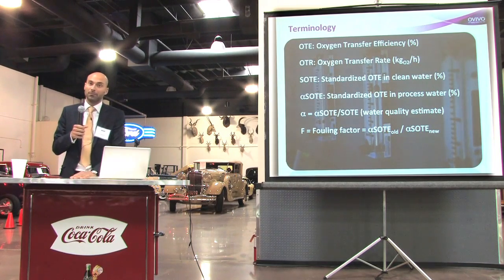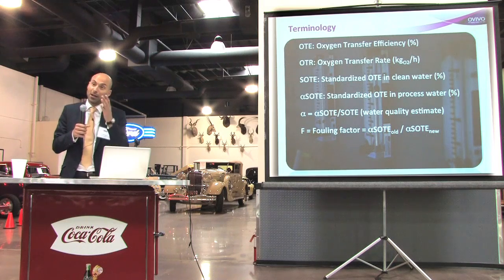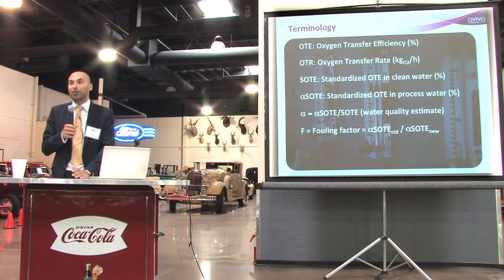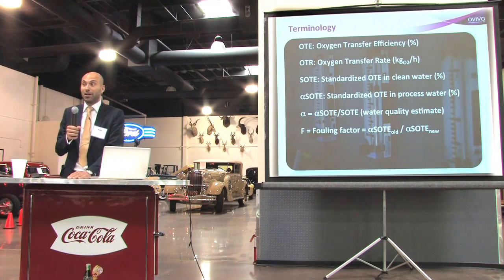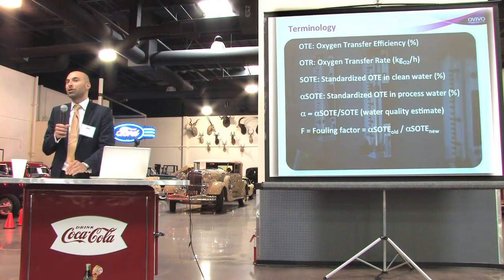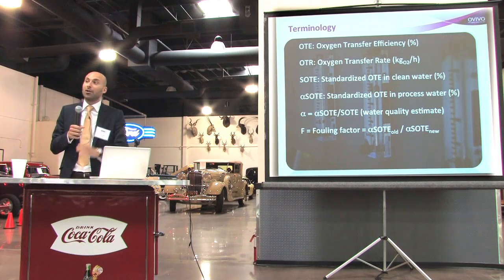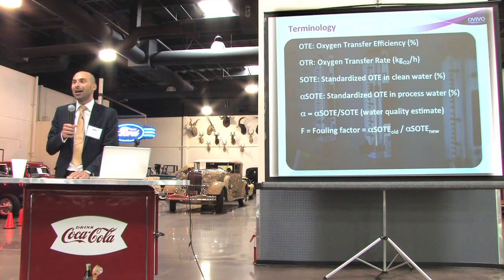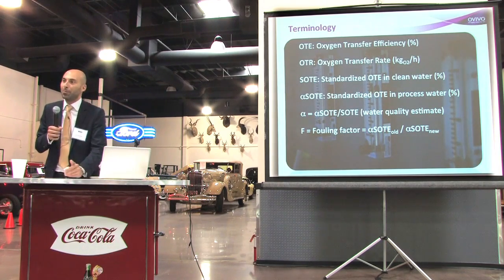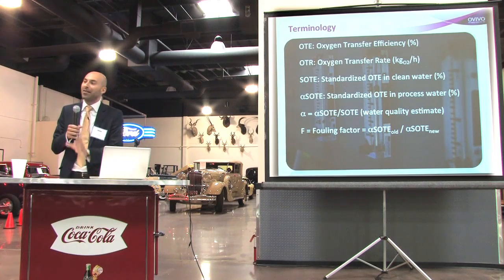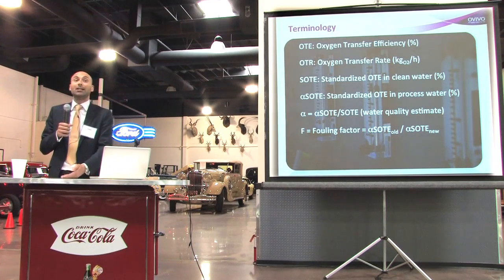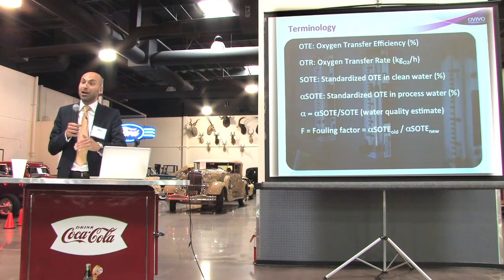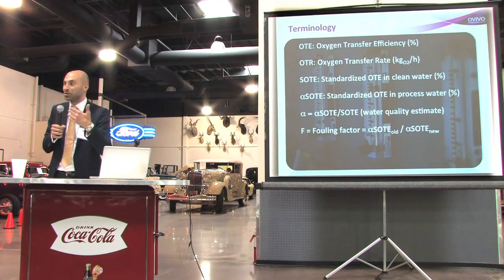The ratio of the current alpha value to the initial value is called the fouling factor f, which starts at 1.0 by definition and can decline over time. When you design or own a system, it must be sized not just for day one but to last for years — because if efficiency drops significantly in two years, your power bill will go up, and you may also lack the capacity to supply enough oxygen to meet treatment needs.